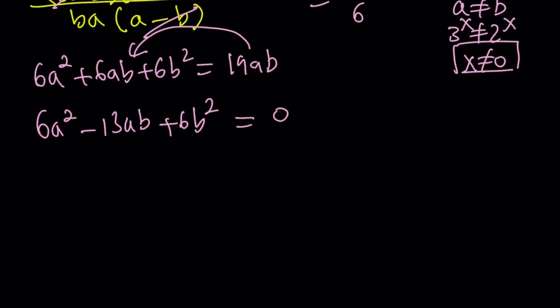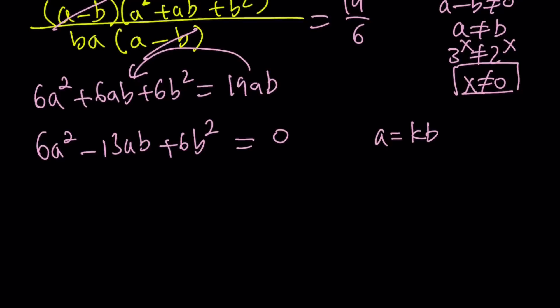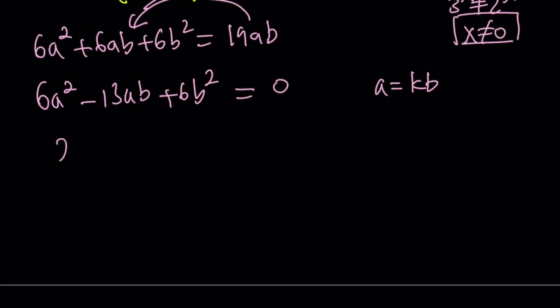You can use trial and error or the x method or the quadratic formula. For example, one of the things you can do is, since this is a homogeneous equation, you can replace a with kb and then plug it in and solve for k, so on and so forth. We know that a and b are not going to be 0 because 2 to the x and 3 to the x can never be 0, right? Okay. So we can find the solutions that way. But here's what I'm going to do. I'm just going to give you the factors. The factors are going to look like 2a minus 3b and 3a minus 2b.